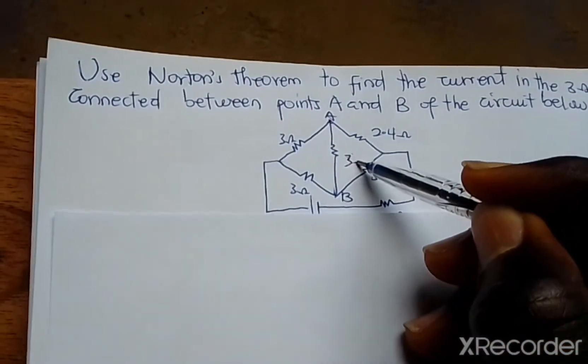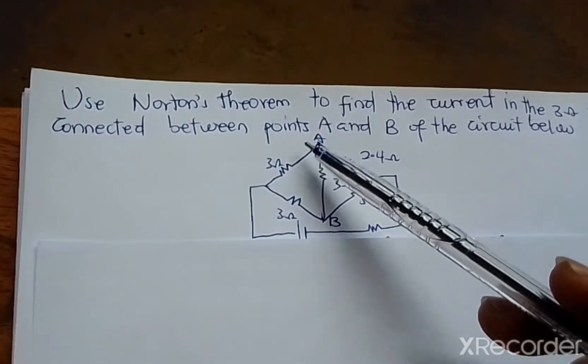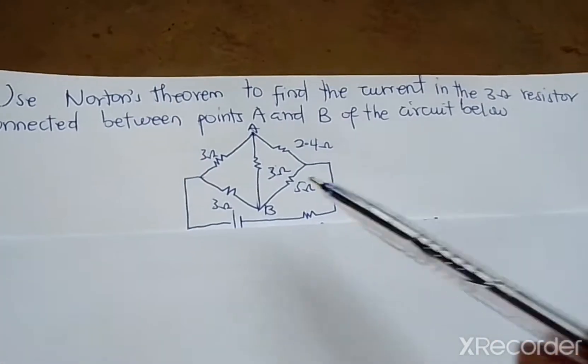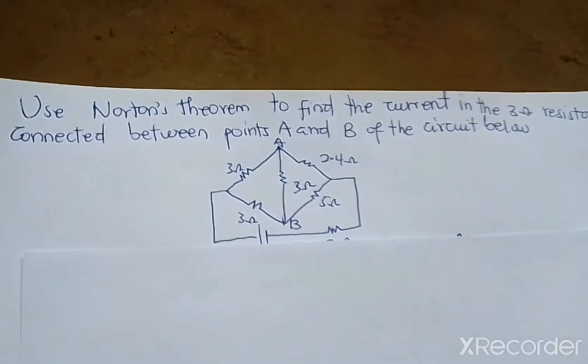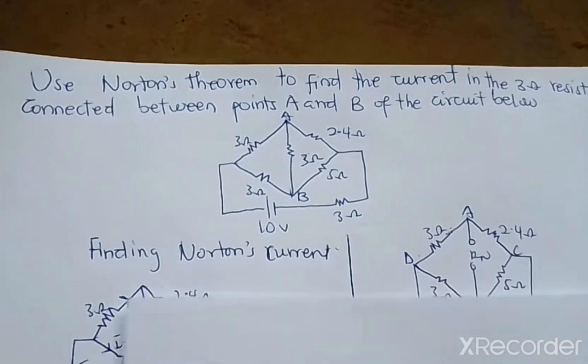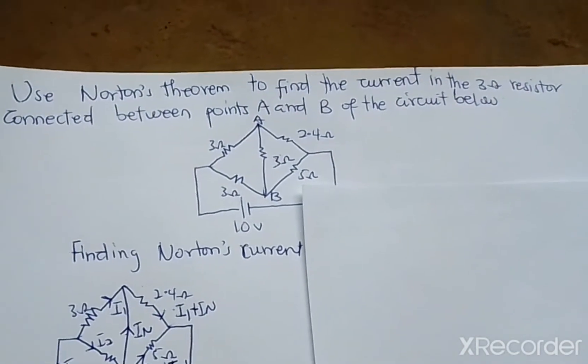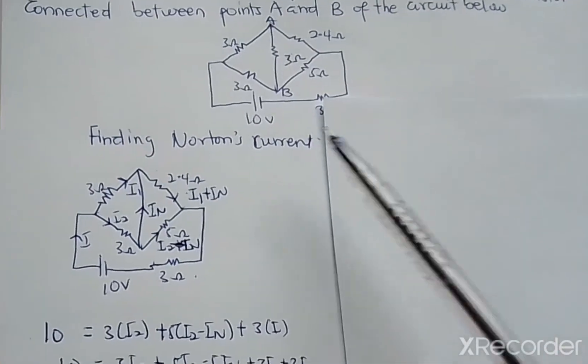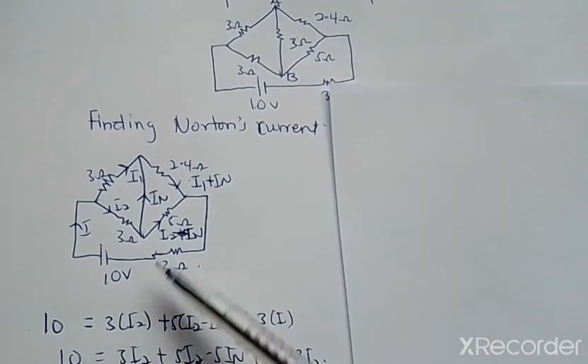There is a 3-ohm resistor here between A and B, so you have to find the current through it using Norton's theorem. But this is a bridge circuit, so first of all you have to find the Norton's current. In finding the Norton's current, you have to redraw the circuit and remove the 3-ohm resistor and replace it with a short circuit.